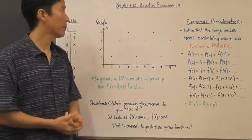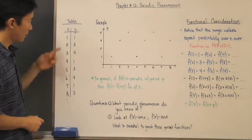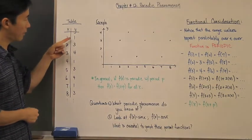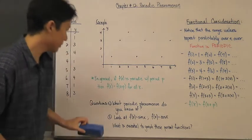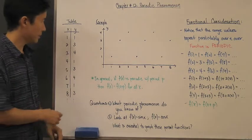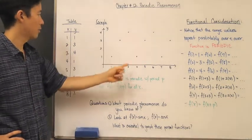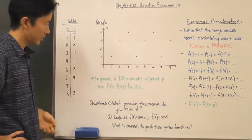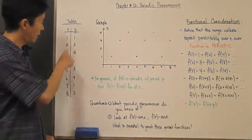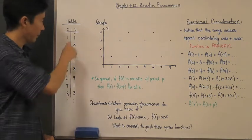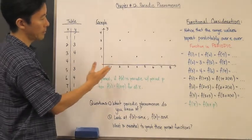Let's take a look at this basic table of values, which starts at one and goes to eight and continues. Notice that the y-values are one, three, four, one, three, four, one, three, and so on. I've gone ahead and put all those values onto a graph, so notice I plot (1,1), (2,3), (3,4), (4,1), (5,3), (6,4), and so on. You should be able to recognize that these x-values go by increments of one, while the y-values all repeat.